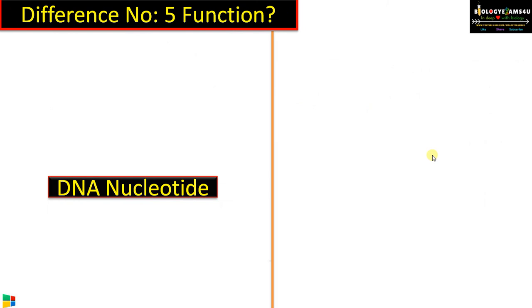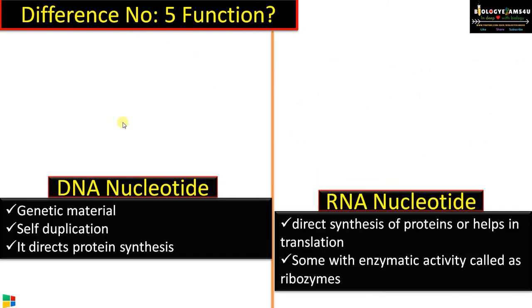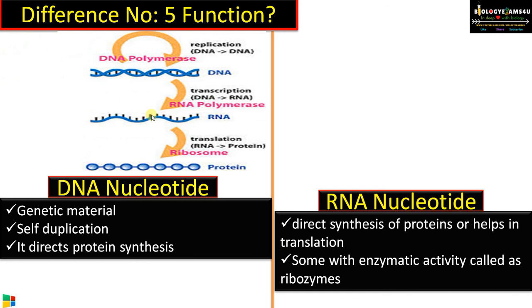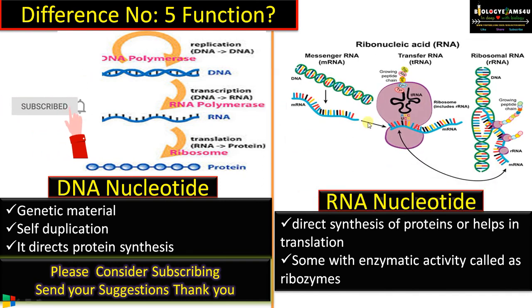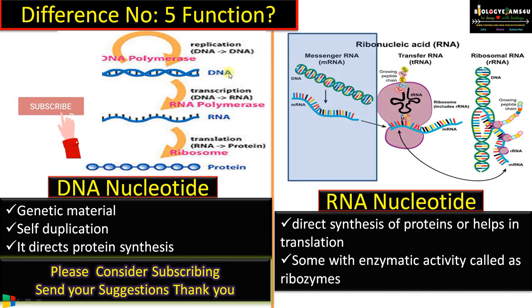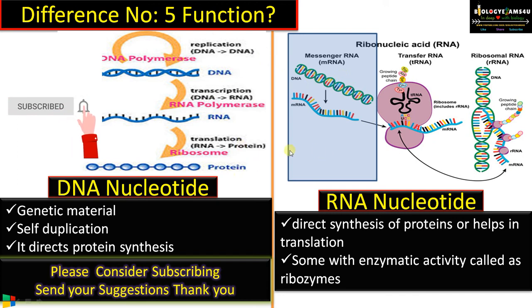Difference number five regarding function: DNA nucleotide is a genetic material — it can replicate, it directs protein synthesis, and it is the blueprint of life. The information coded in DNA directs the synthesis of proteins. Whereas RNA nucleotide has different functions. In the case of mRNA, it acts as a messenger between DNA and protein during protein synthesis.